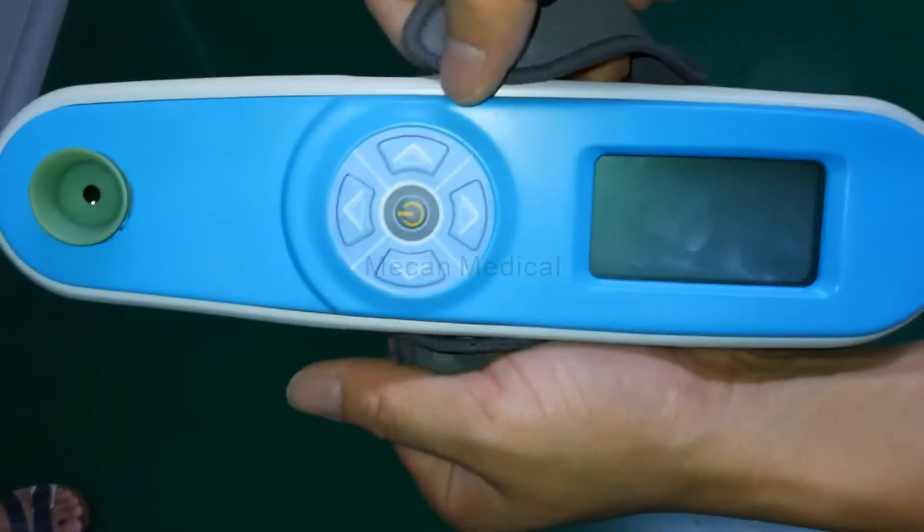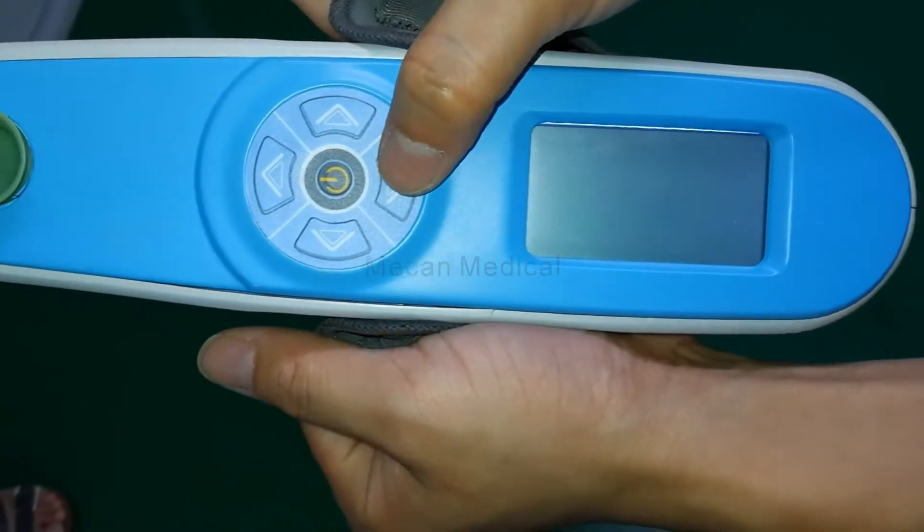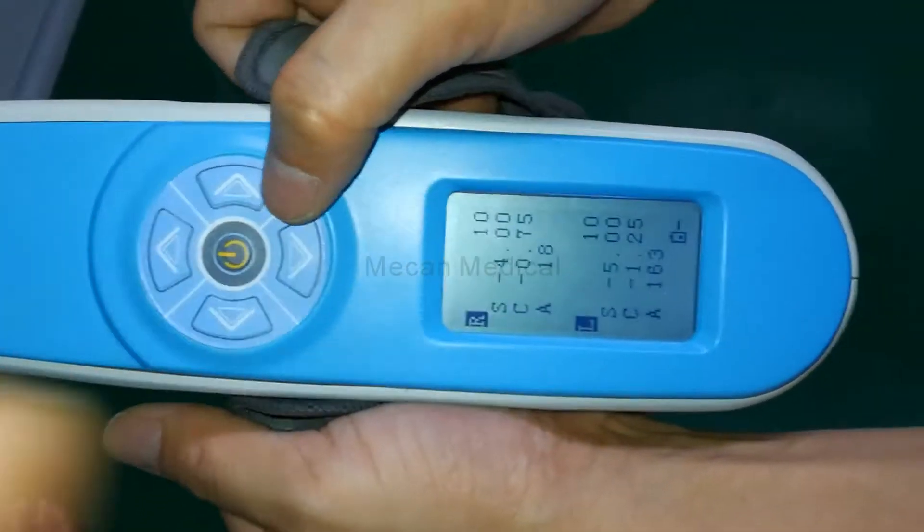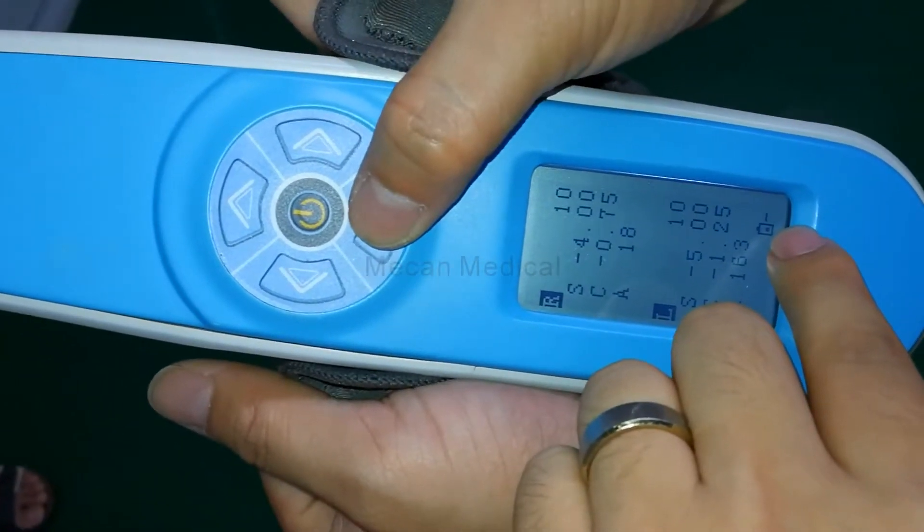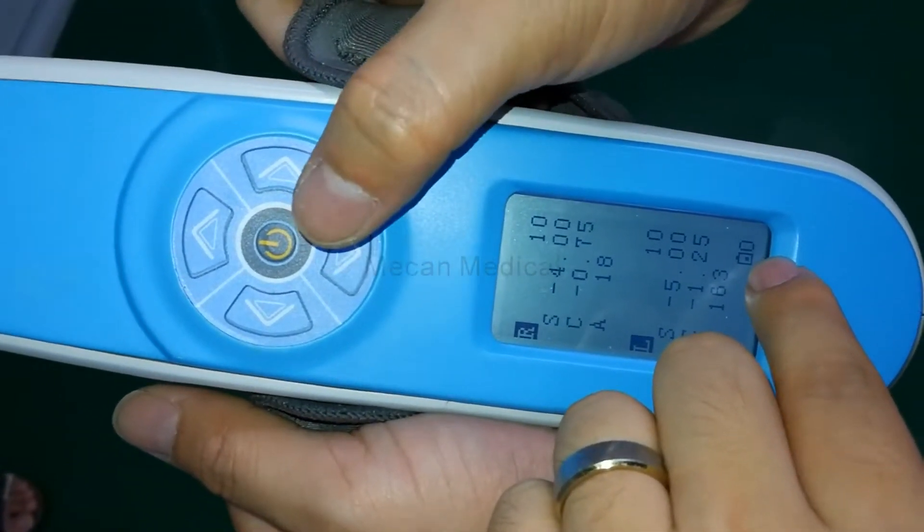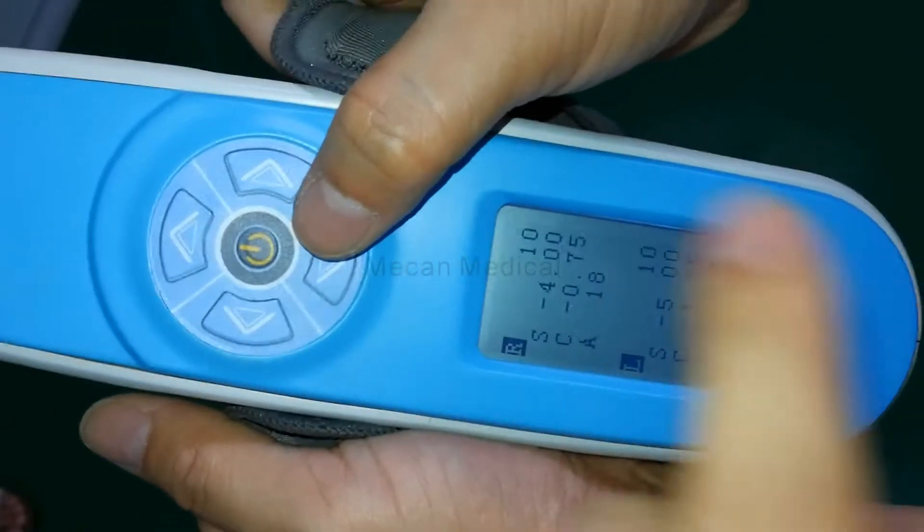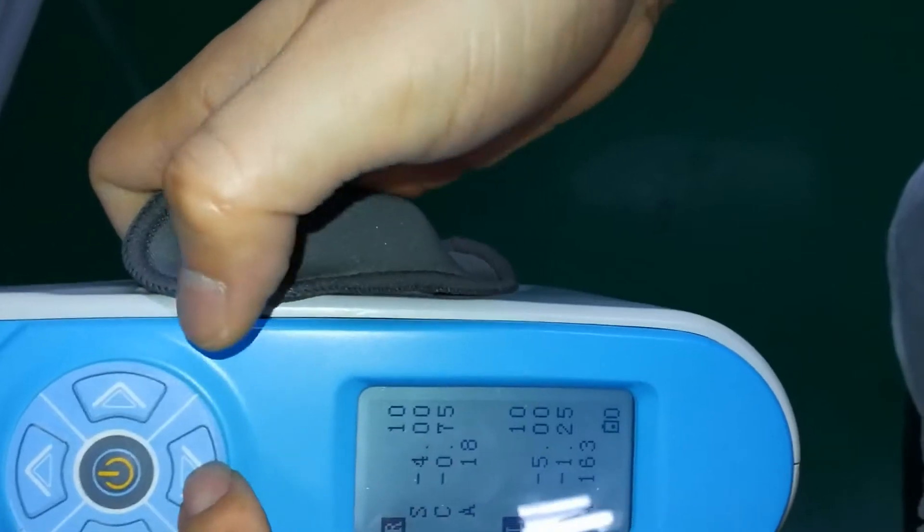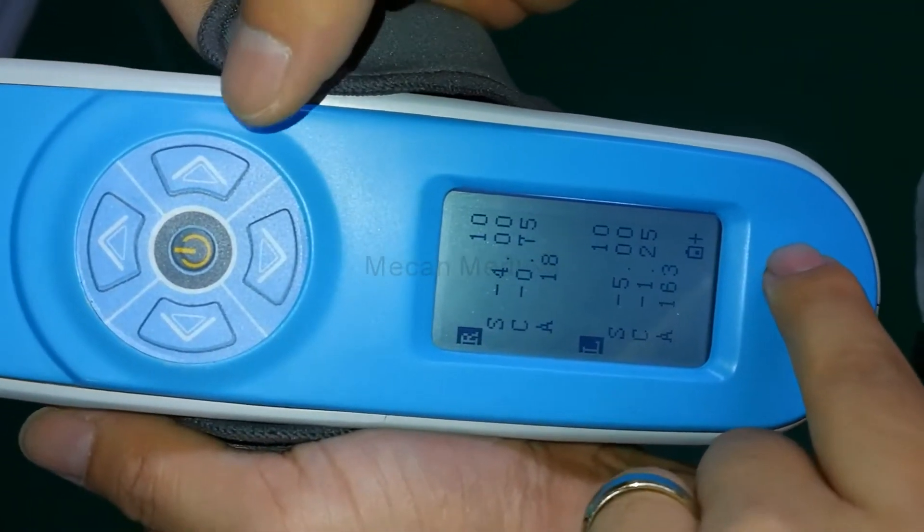First, switch on the machine, and you see the mark there. It depends on the patient's eye. If that is minus, it's myopia. Zero represents normal eye, and plus the myopia.